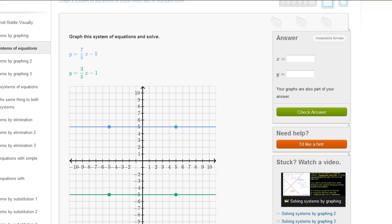And they give us two equations, this first one in blue, y is equal to 7 fifths x minus 5, and then this one in green, y is equal to 3 fifths x minus 1. So let's graph each of these in the corresponding color. First let's graph this first equation.